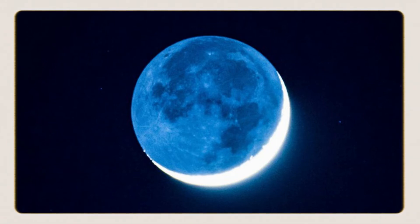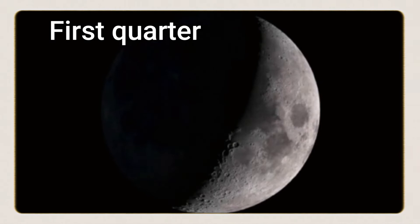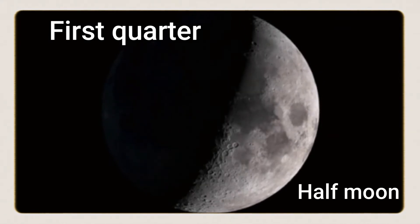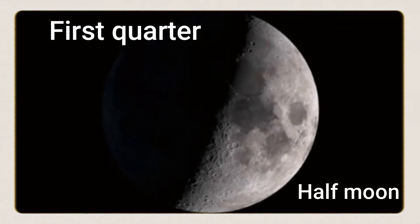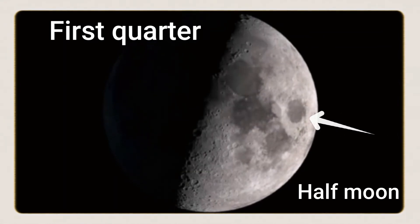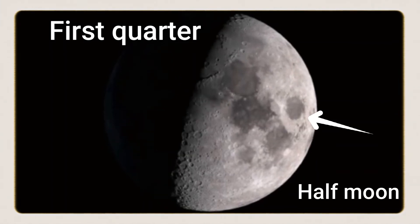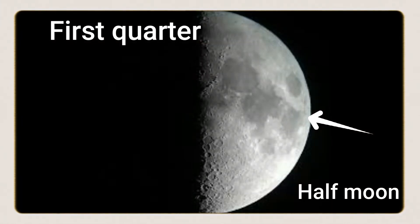After crescent, we see the first quarter phase, when the sunlit portion is bigger and we can see half of the moon. It is called half moon. We call it first quarter because the moon has traveled about a quarter of the way around the earth from the new moon.